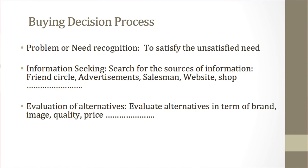In the next step, the consumer seeks information about different alternatives — for example, different restaurants where the consumer can have good food. In this second step, information is gathered from different sources: maybe your friend circle, advertisements, salesmen, websites, or you can visit the actual restaurant. All this helps in gathering information about satisfying the particular need.